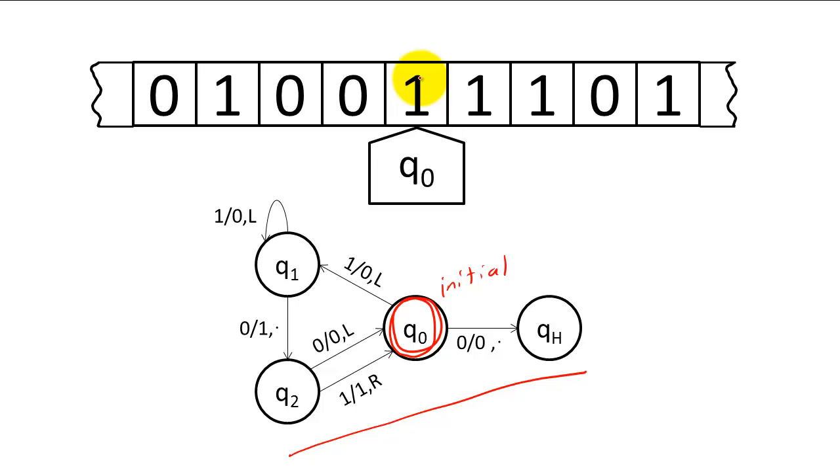So, in the initial state, we see that the current cell has value 1. Our state diagram tells us that we will transition to state q1, change the value of the current cell to a 0, and then move the head to the left one cell.